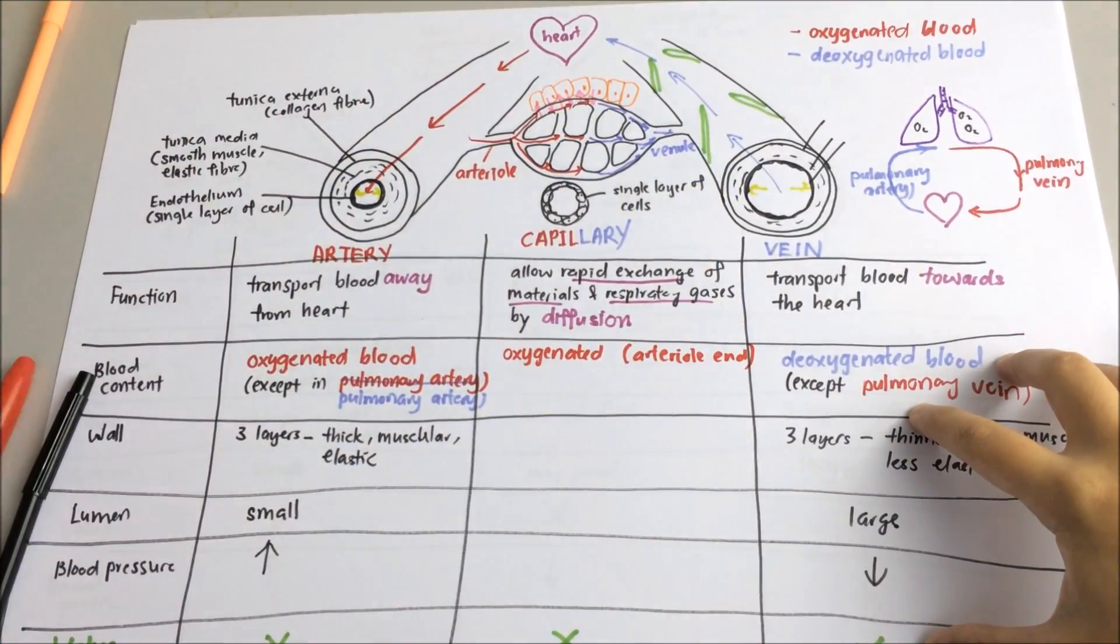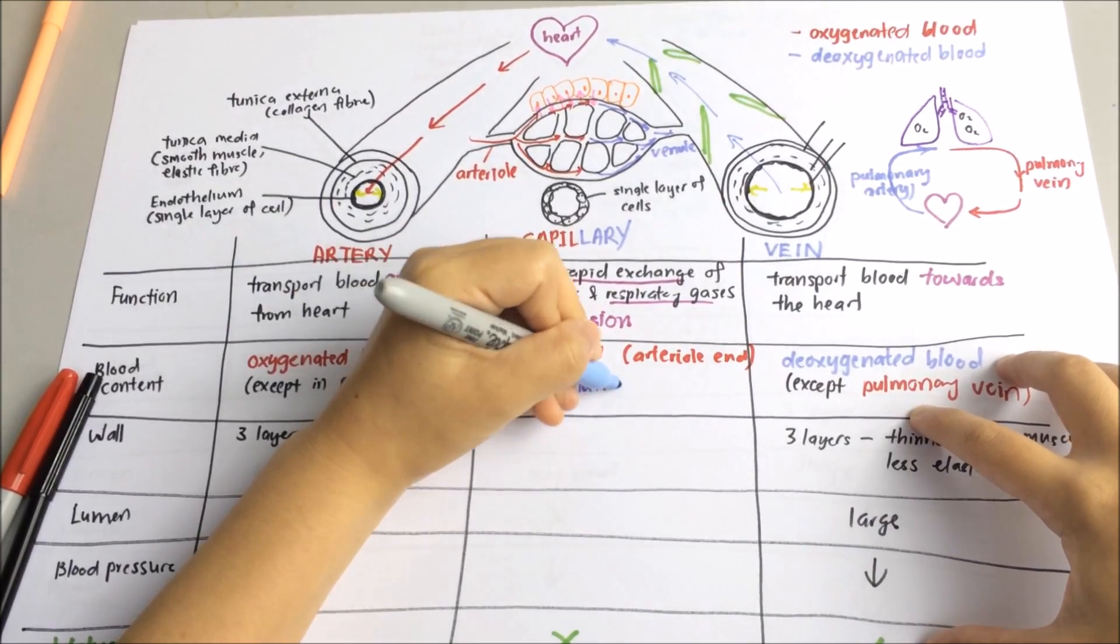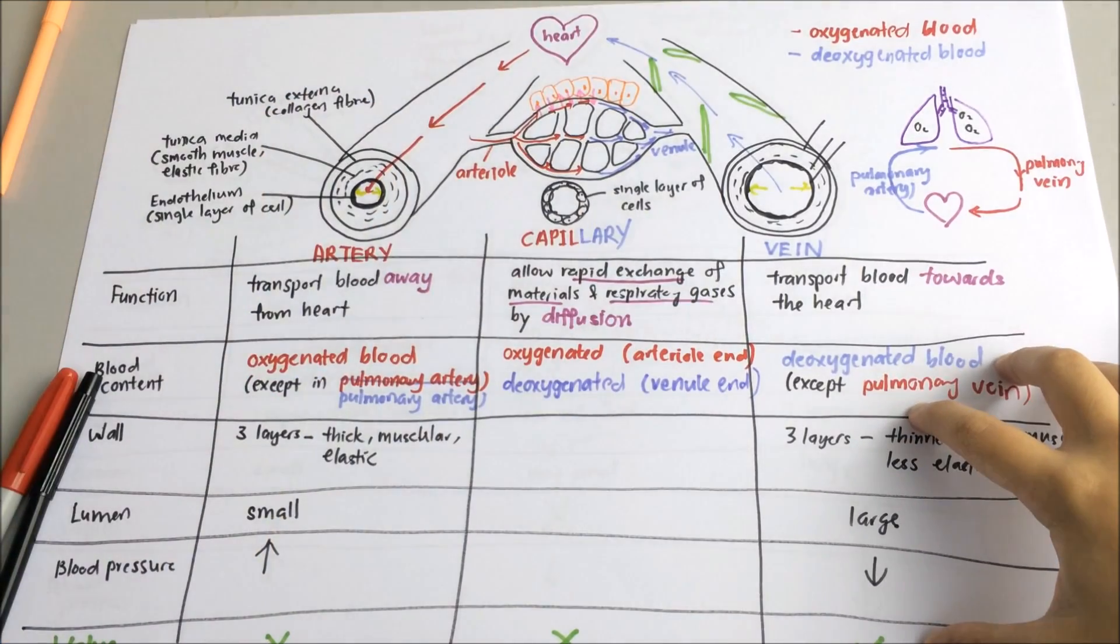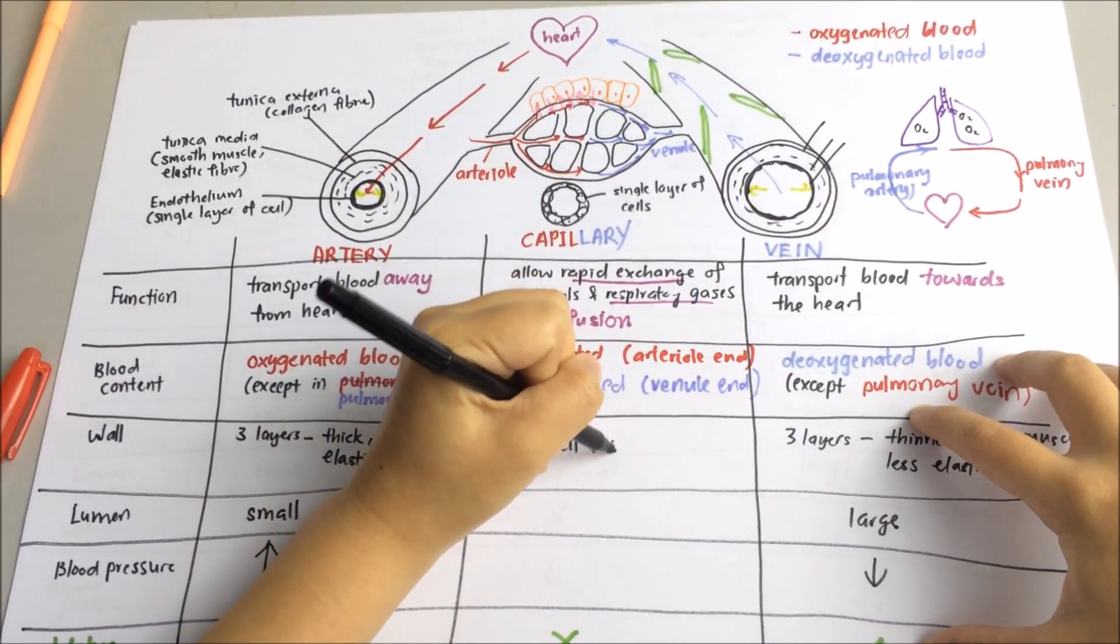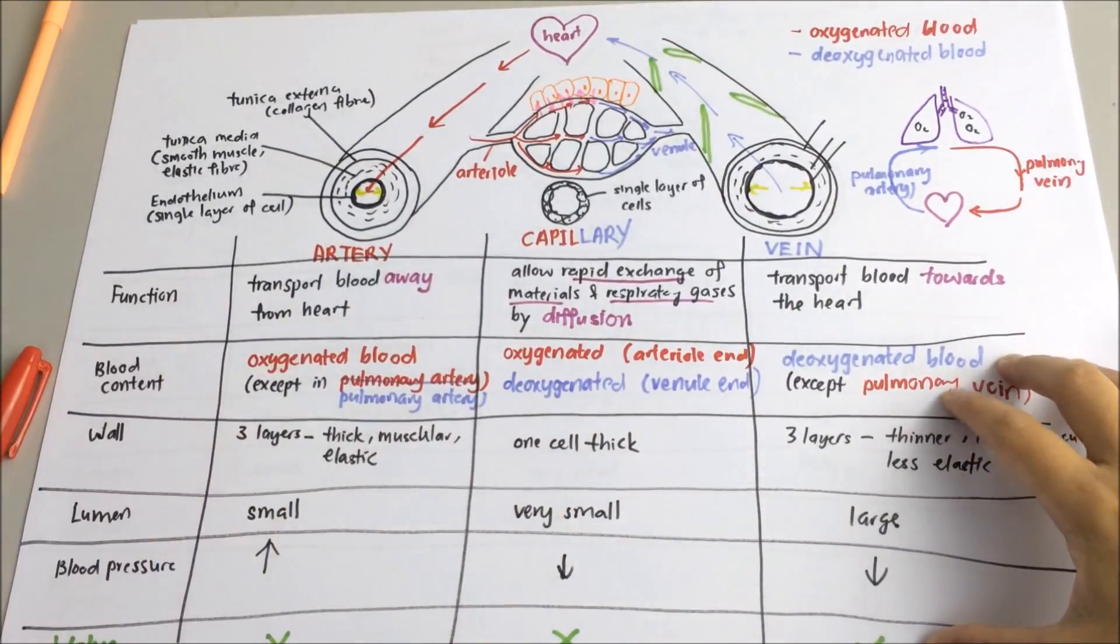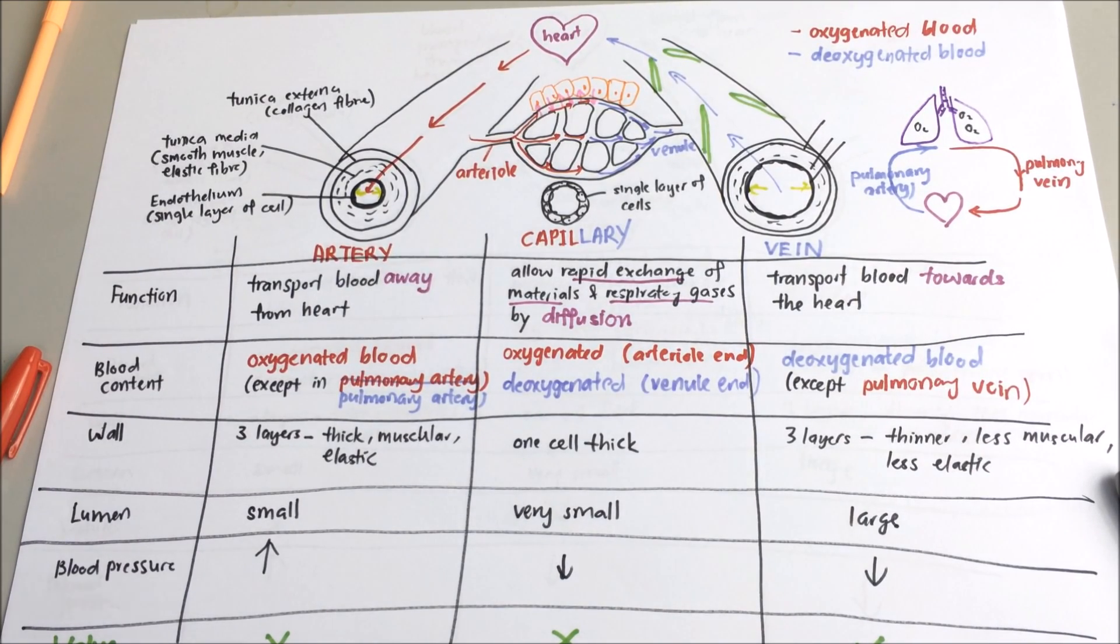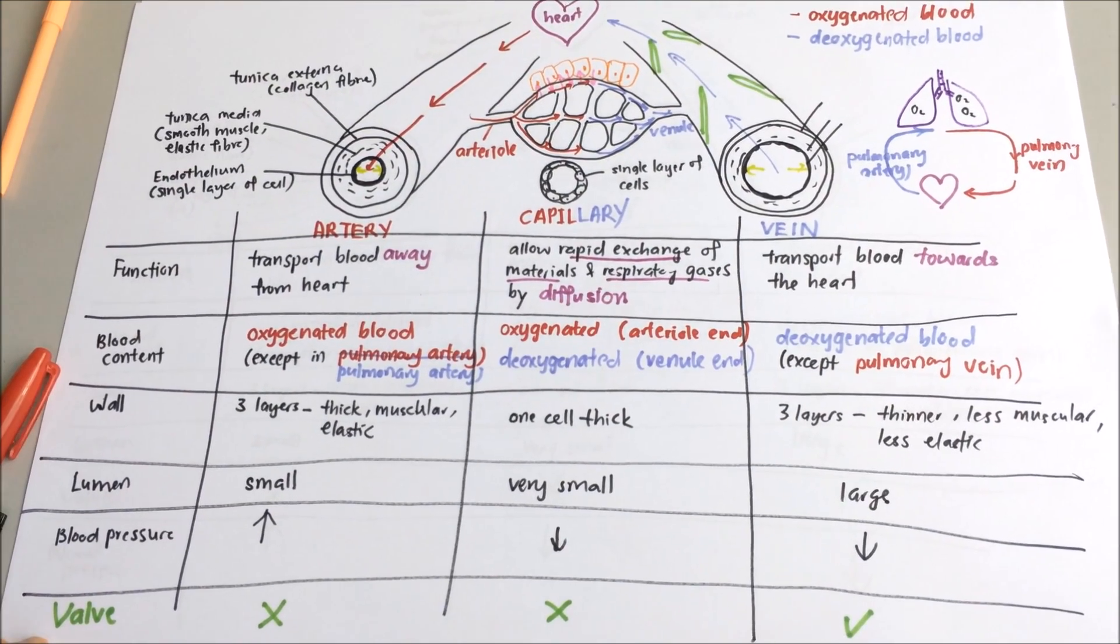At the arterial end, there is oxygenated blood. The wall is only one cell thick. The lumen is very small. Blood pressure has to be low because capillary is only one cell thick. And there is no valve.